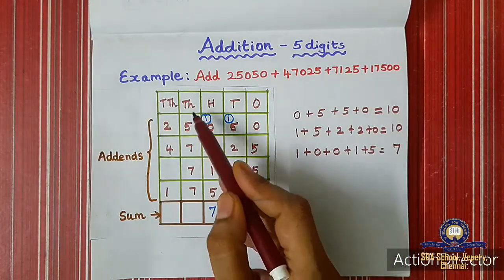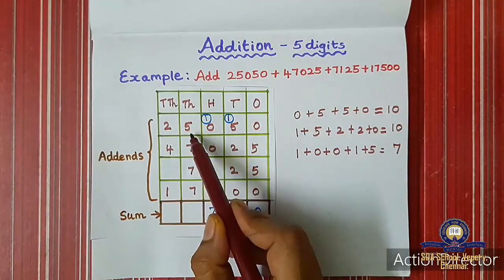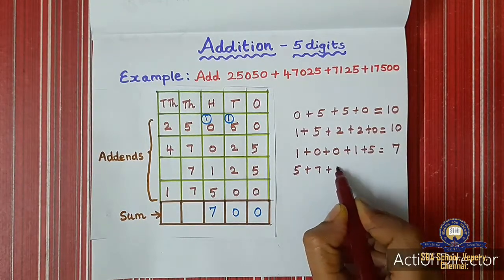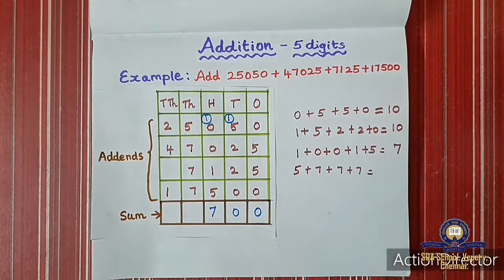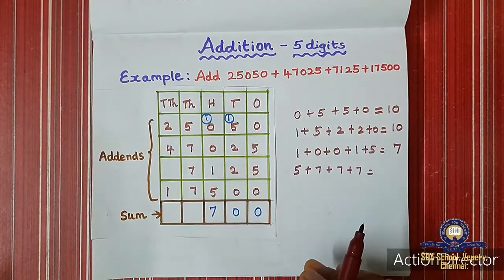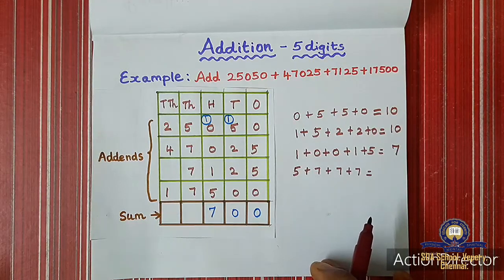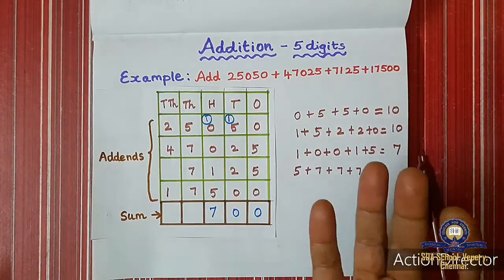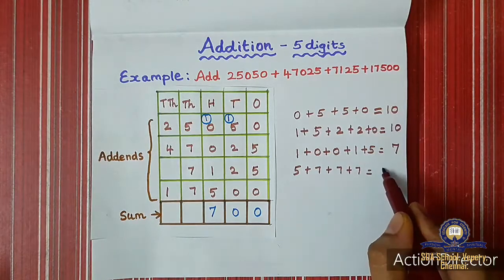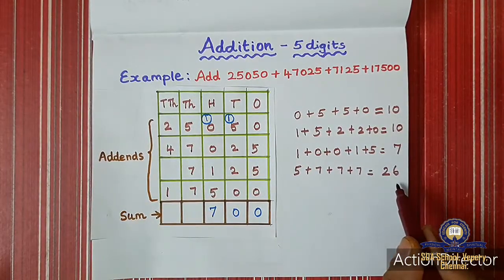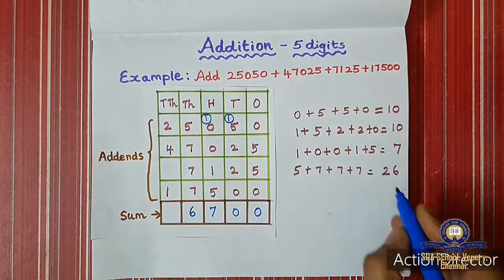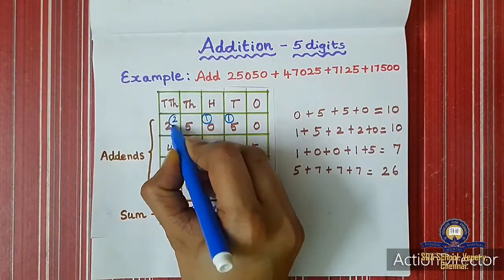Now we add the thousands place: 5 plus 7 plus 7 plus 7. 5 plus 7 is 12, plus 7 is 19, plus 7 is 26. So we write 6 in the thousands place and carry 2 to the ten-thousands place.